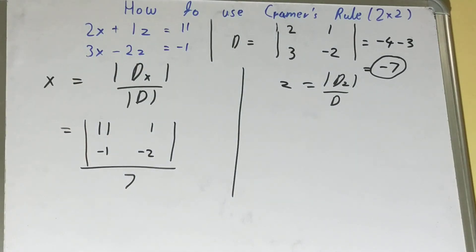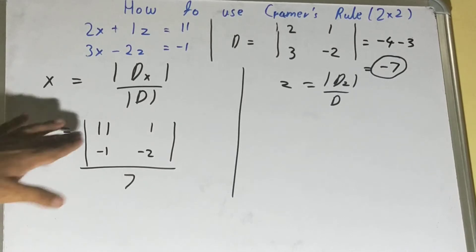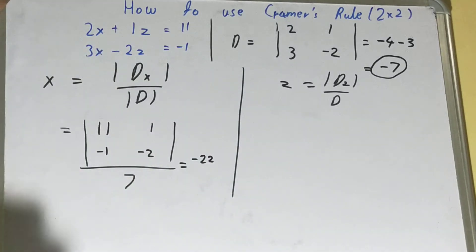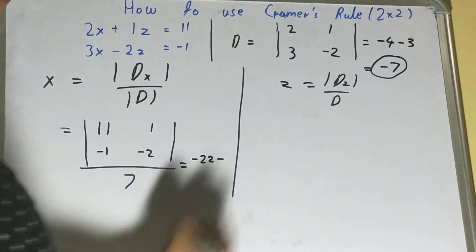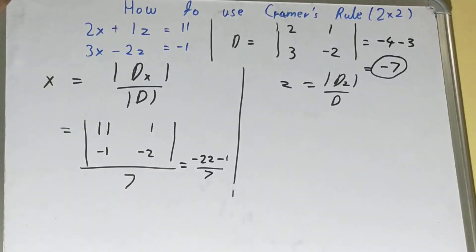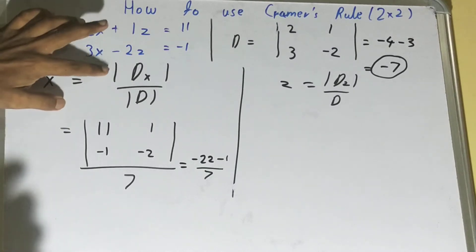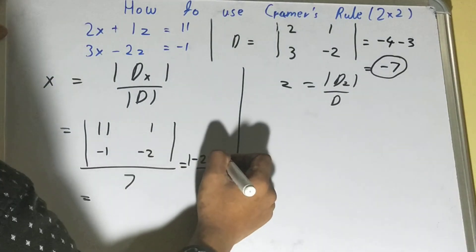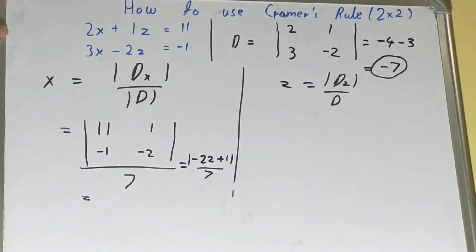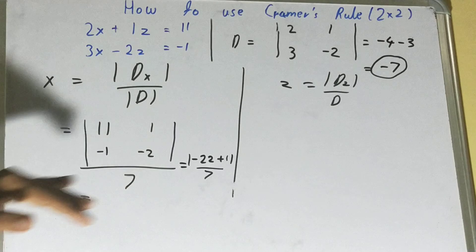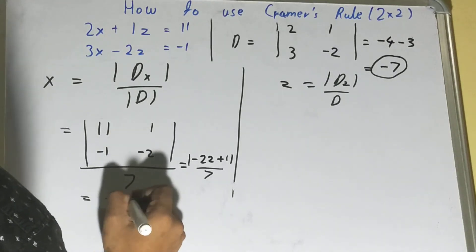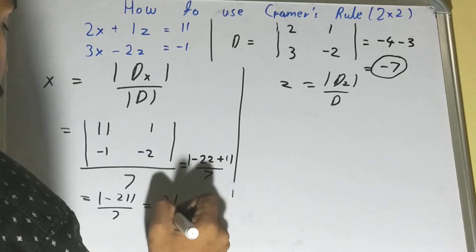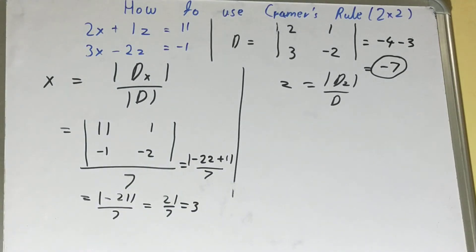Solving the dx matrix: 11 times minus 2 is minus 22, and minus 1 times 1 is minus 1. Note that we consider the absolute value, so we take the positive result. That gives us minus 22 minus 1 equals minus 23 — wait, it is minus 21 upon 7, and the positive value of minus 21 is 21. So 21 divided by 7 equals 3. The value of x is 3.